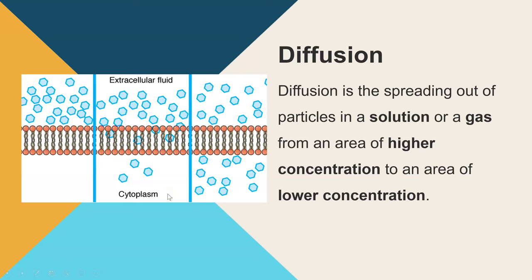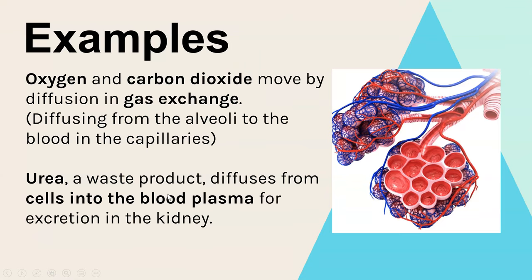Examples of where this happens in biology: oxygen and carbon dioxide move by diffusion in gas exchange. In the alveoli, oxygen diffuses from inside the alveoli into the blood capillaries, and carbon dioxide diffuses from the blood capillaries back into the alveoli to be exhaled.